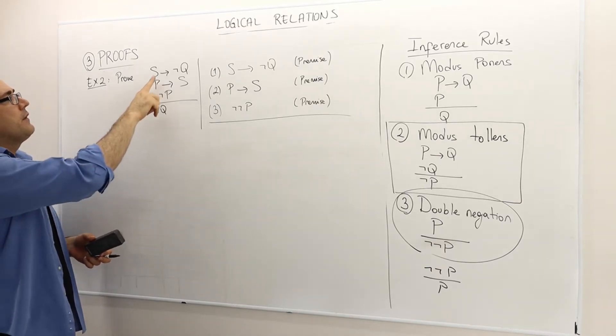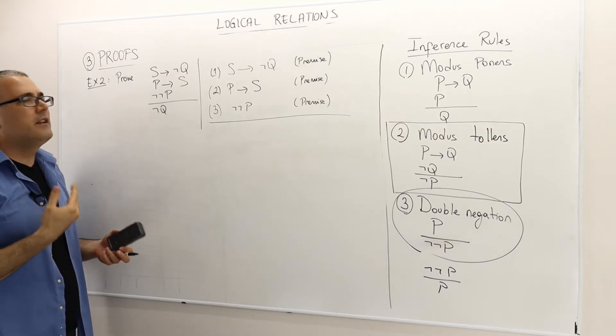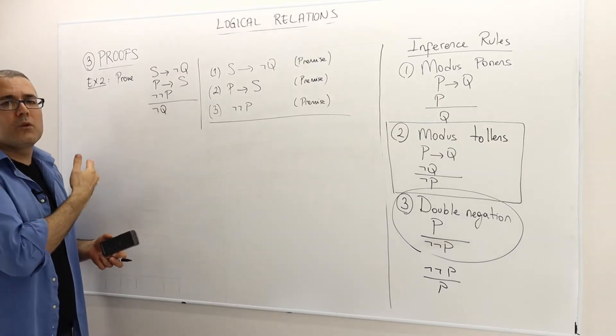I have three premises: S implies not Q, P implies S, and not not P. Therefore, not Q.